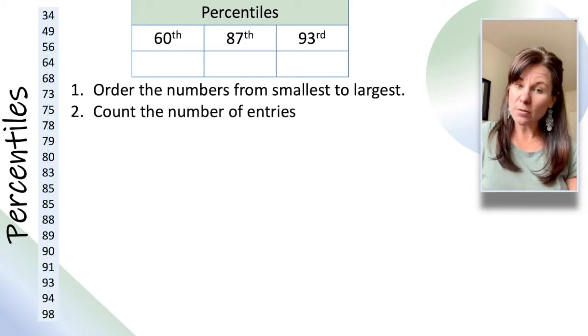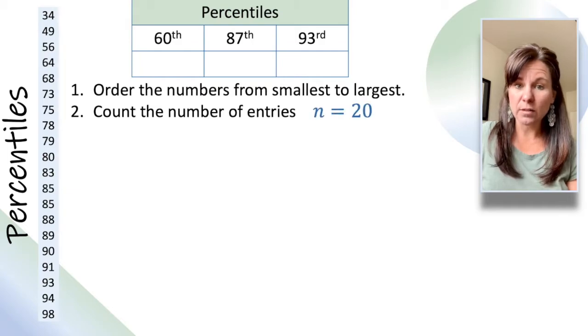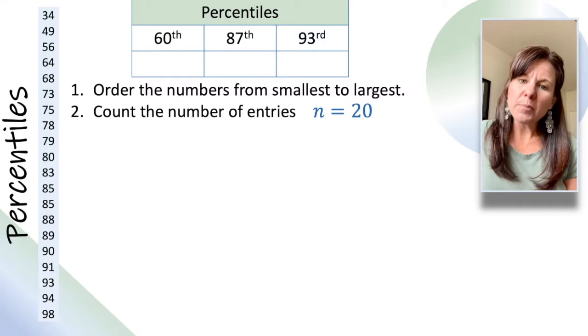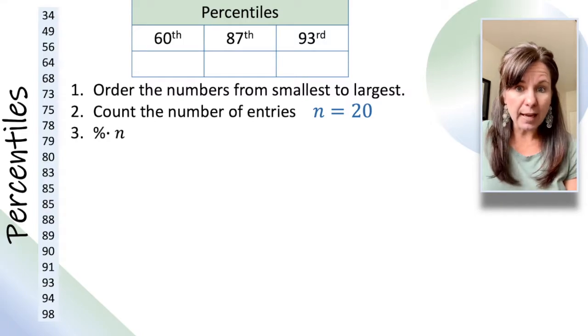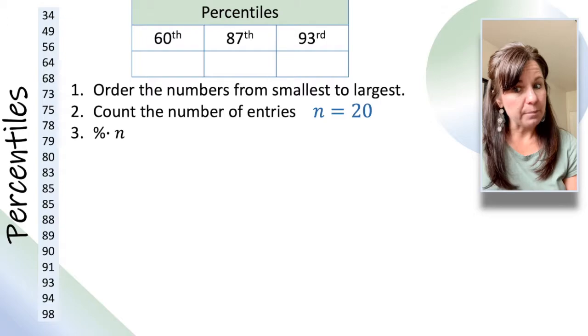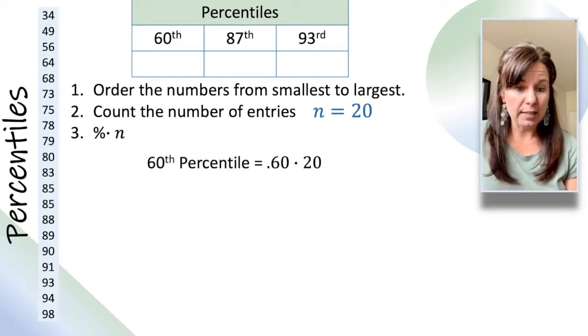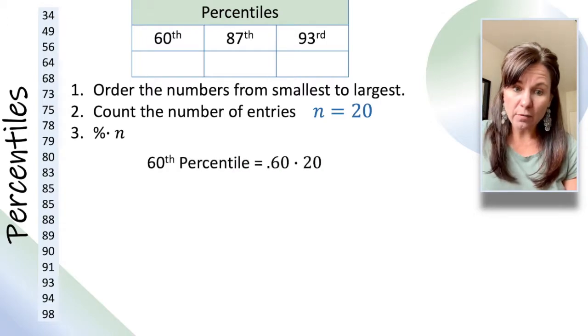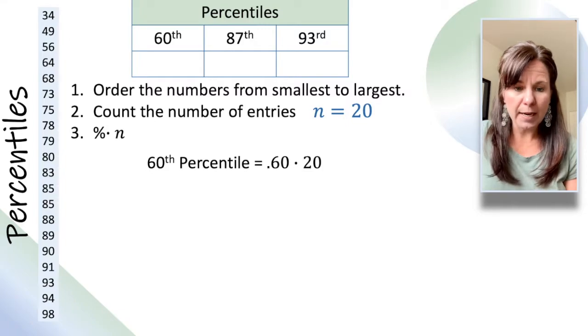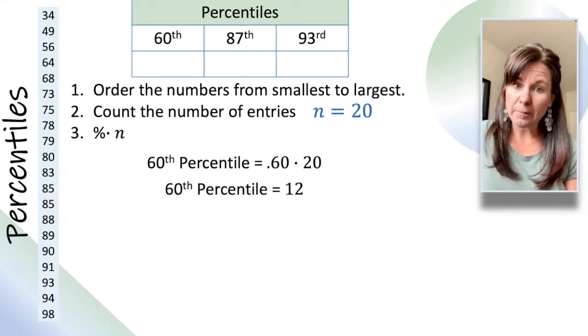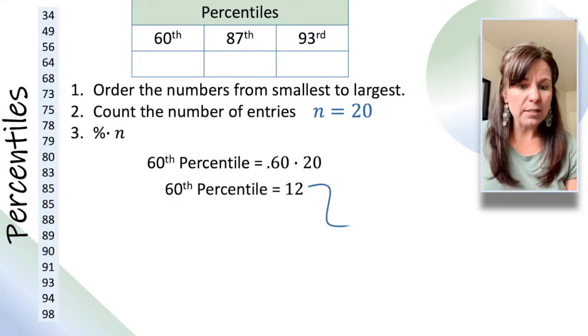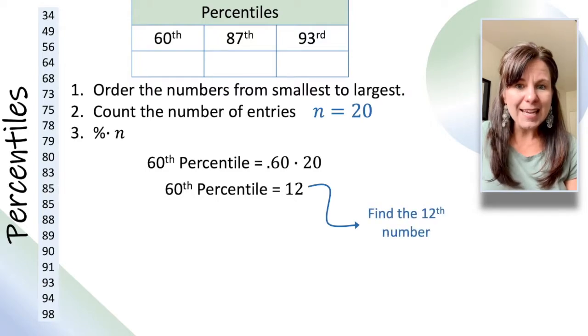Then we count the number of entries we have. In this case, we have 20 students that took the test. And then we take whatever percentile we're interested in and multiply it by the number of entries. So, for the 60th percentile, we're going to take 0.60 for 60% times 20, and that gives us 12.